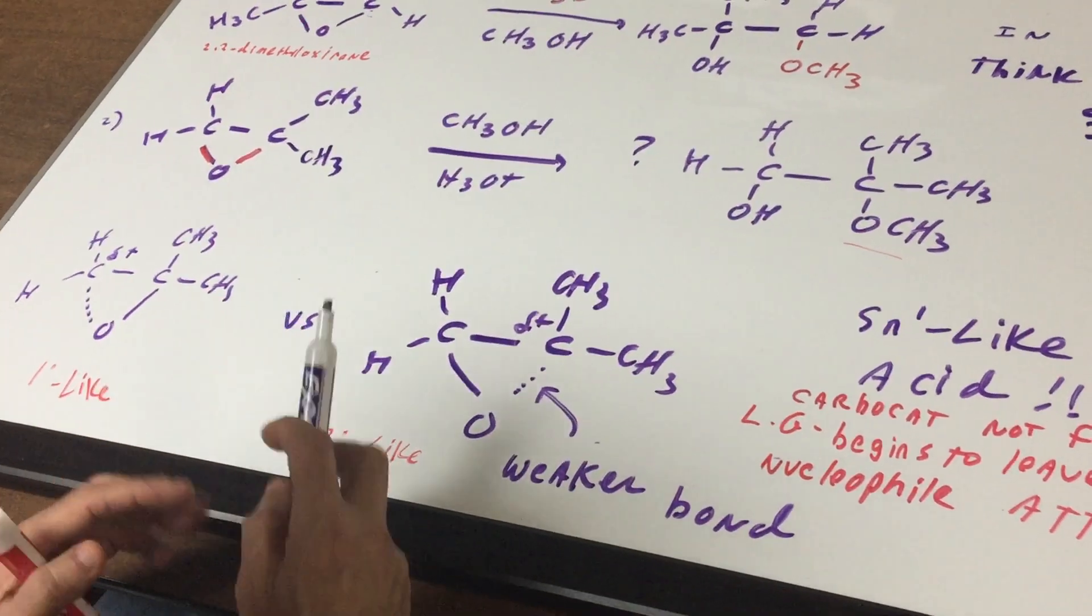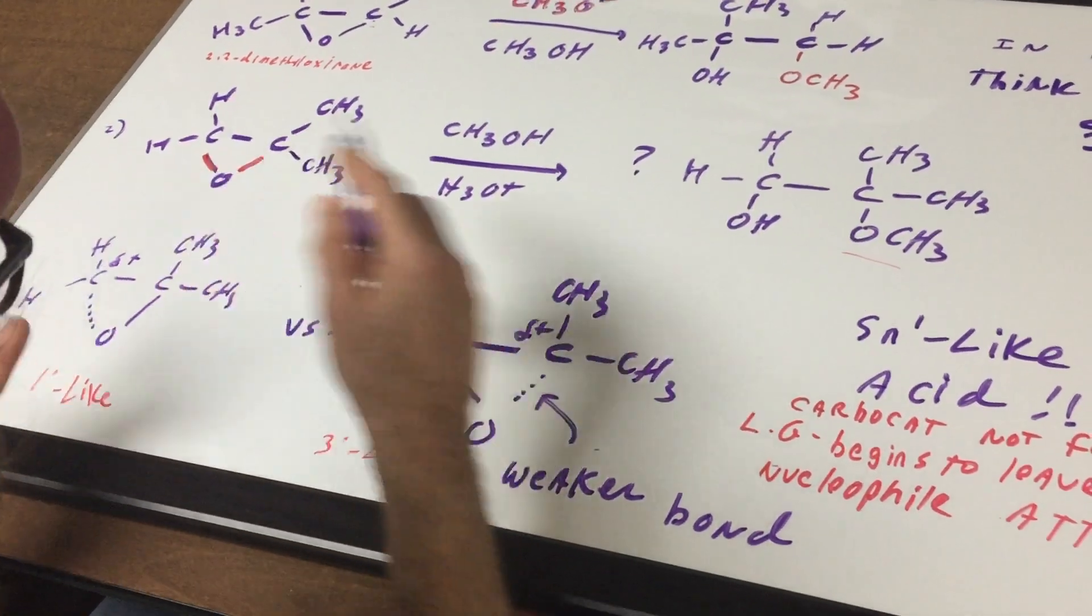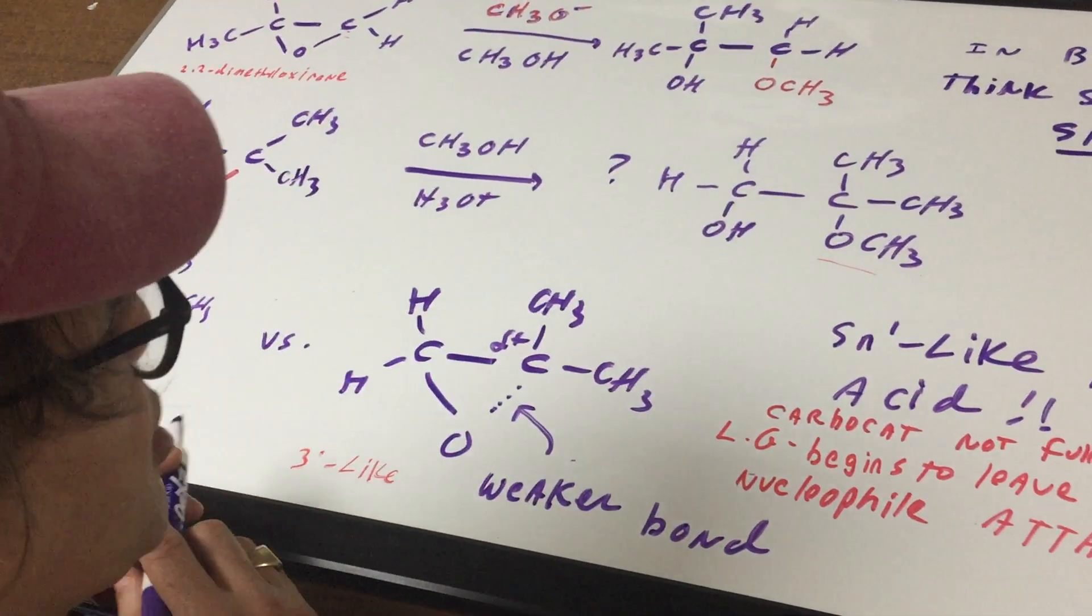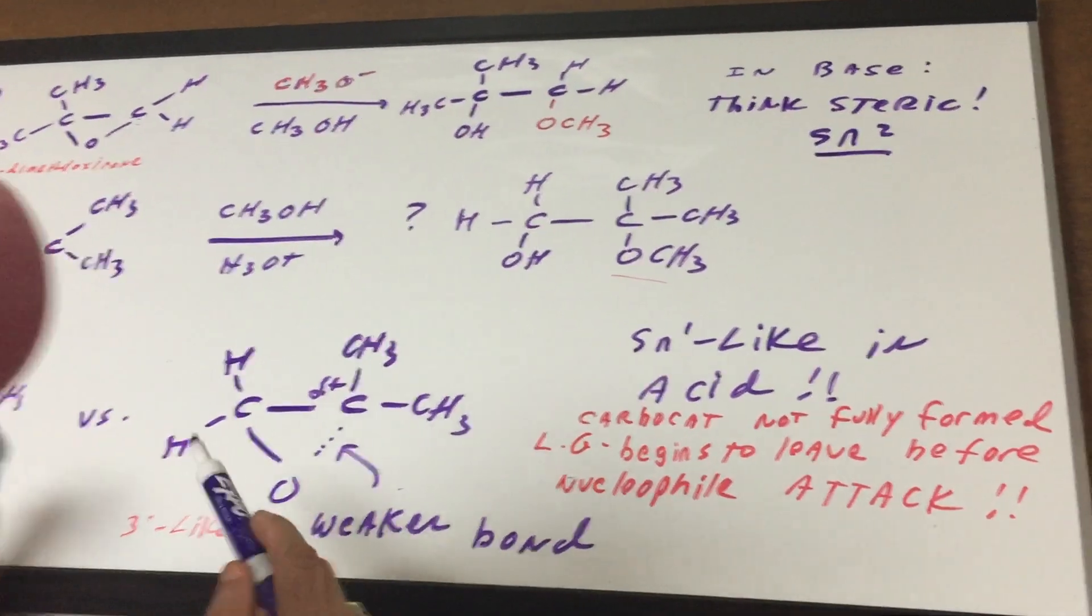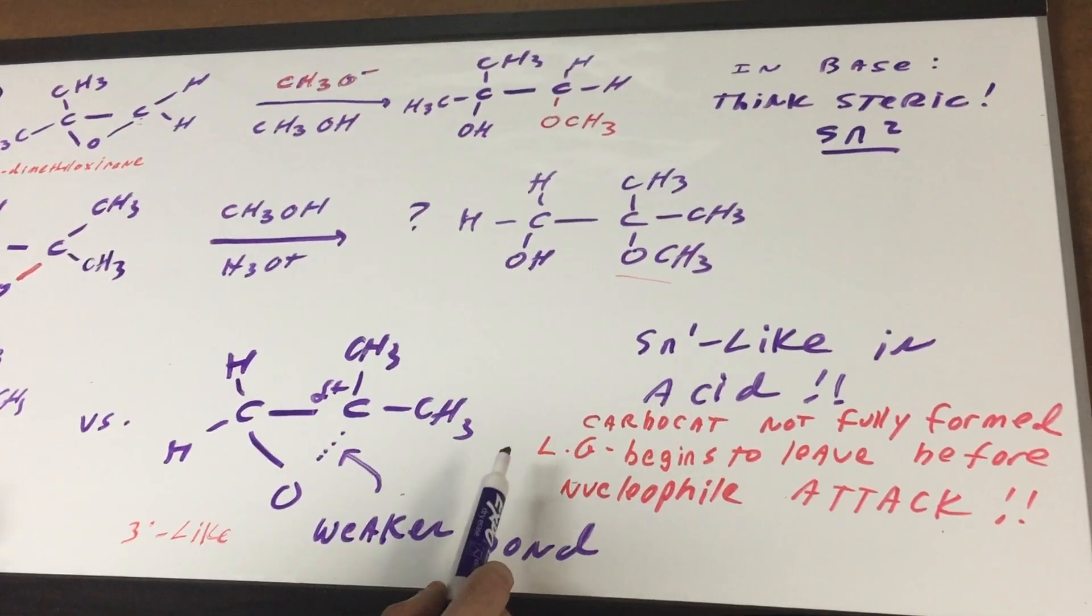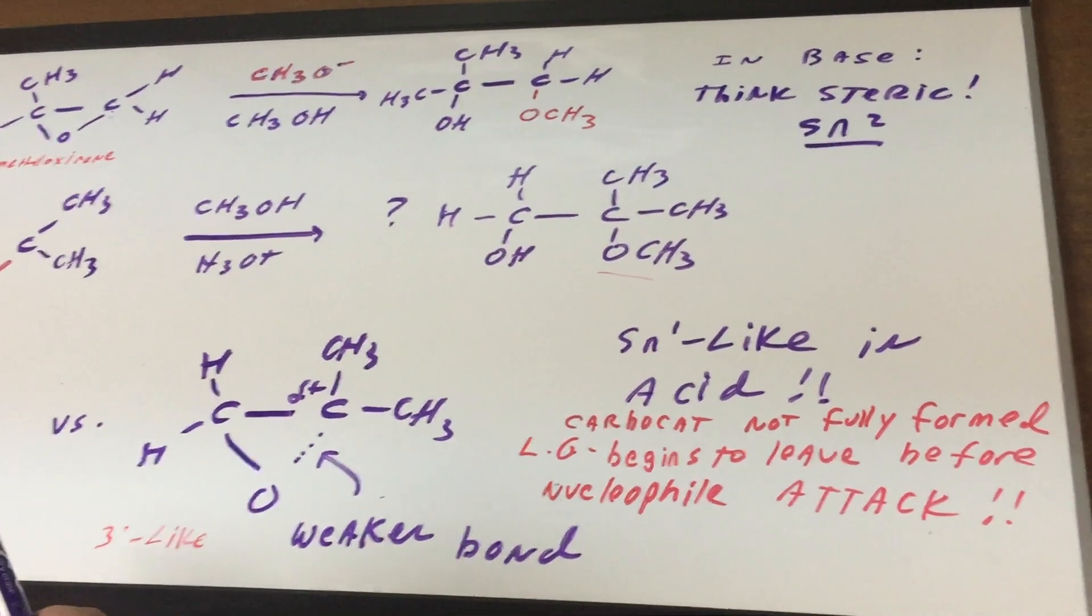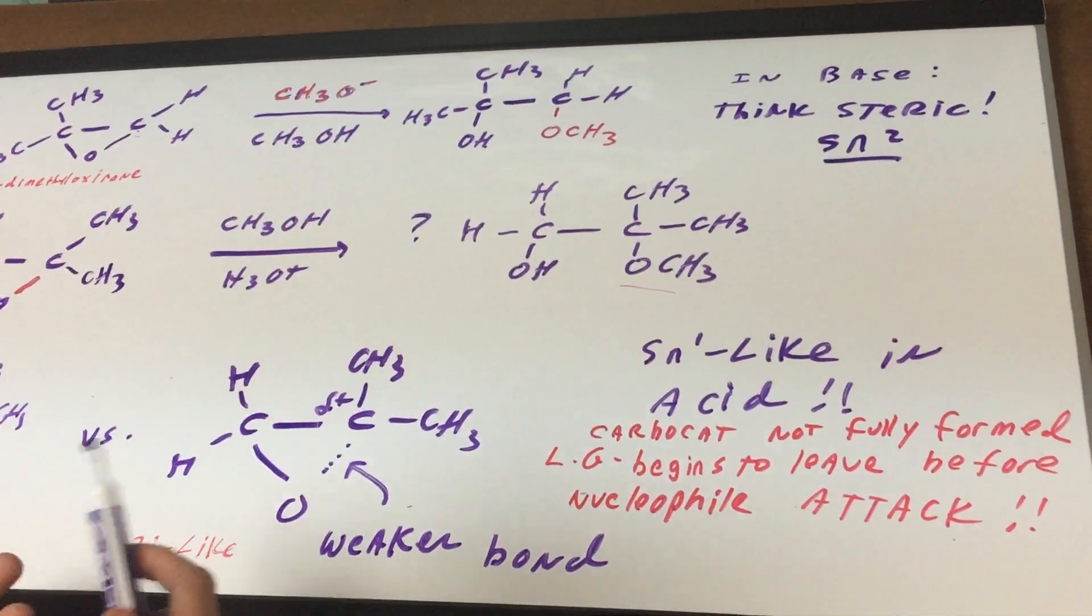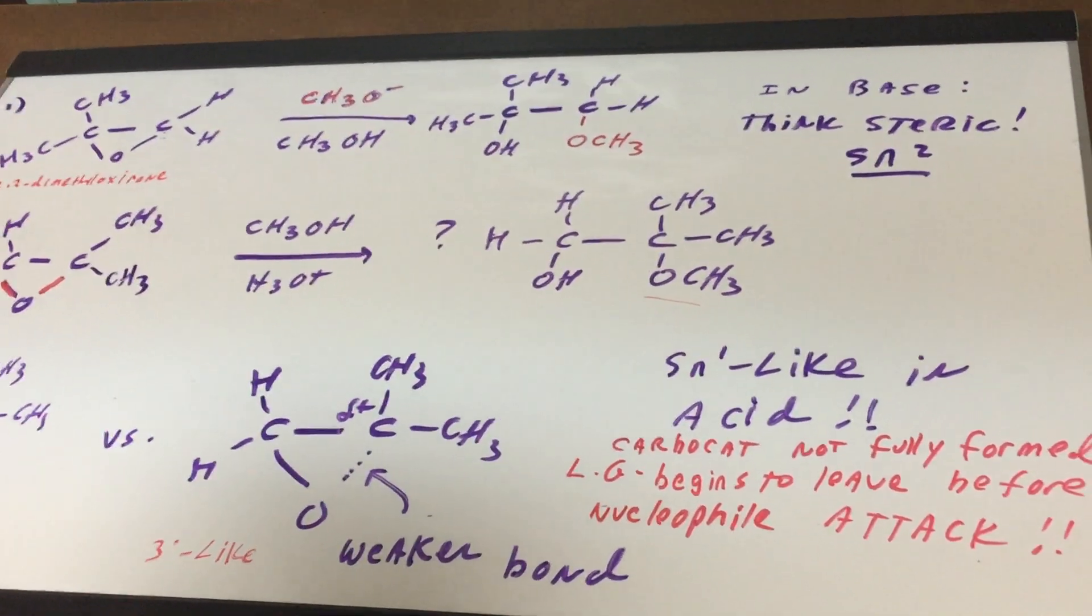So in this medium, you would first protonate, of course, the O, and then this is the group that would begin to leave. I use the word SN1-like in acid. It's not a true SN1 for two reasons. One, the carbocation is not fully formed. And secondly, the leaving group begins to leave before the nucleophile attacks. So it's not a true SN1, but it's an SN1-like type of process.